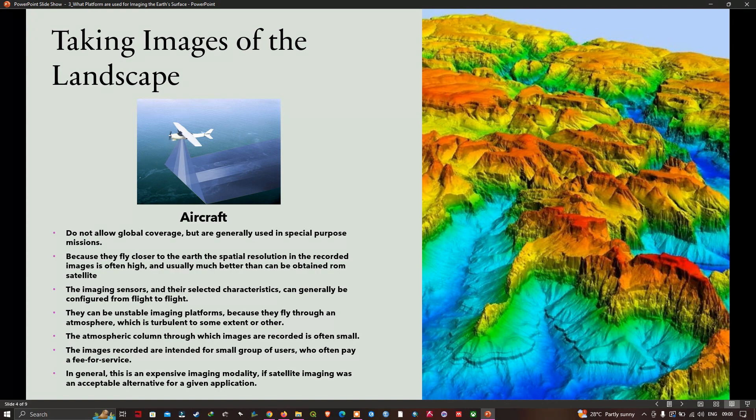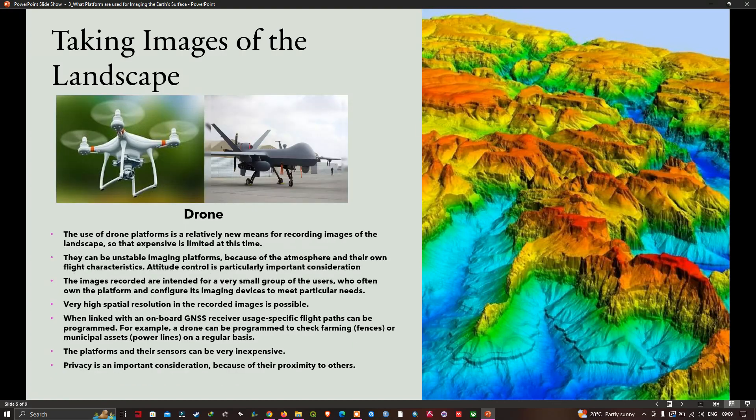We still have much to learn about the uses of unmanned aerial vehicles such as drones for serious remote sensing purposes. The use of drone platforms is relatively a new means for recording images of the landscape, so the experience is limited at this time. Often they can be an unstable imaging platform because of the atmosphere and their own flight characteristics. Altitude and attitude control is a particularly important consideration. The images recorded are intended for only a very small group of users who often own the platform and configure its imaging devices to meet particular needs.